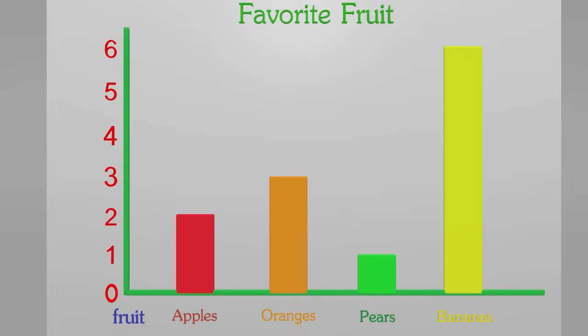Can you guys tell me how many more people liked bananas than oranges? Looking at the graph, we see that six people liked bananas and three people liked oranges. Counting up the graph from three oranges, we count one, two, three spots. There are three more people that liked bananas instead of oranges.